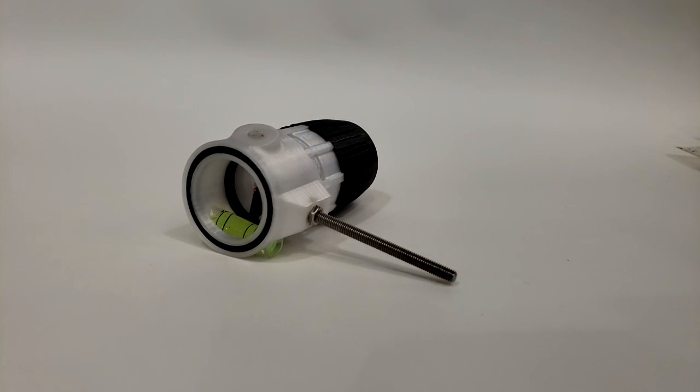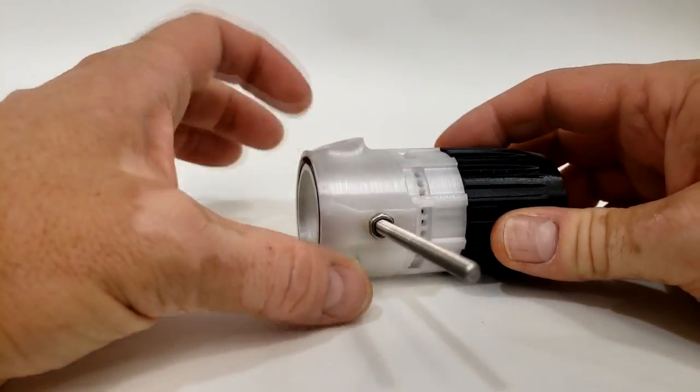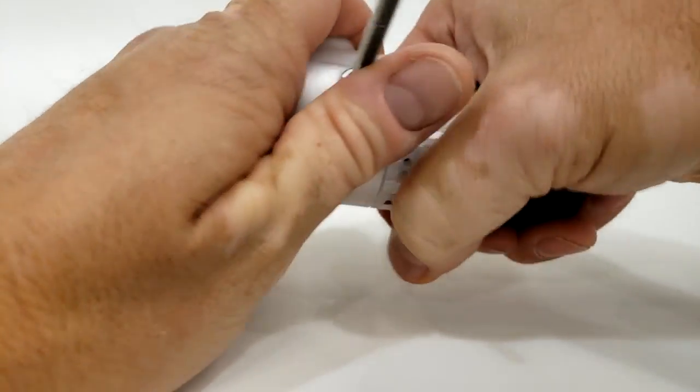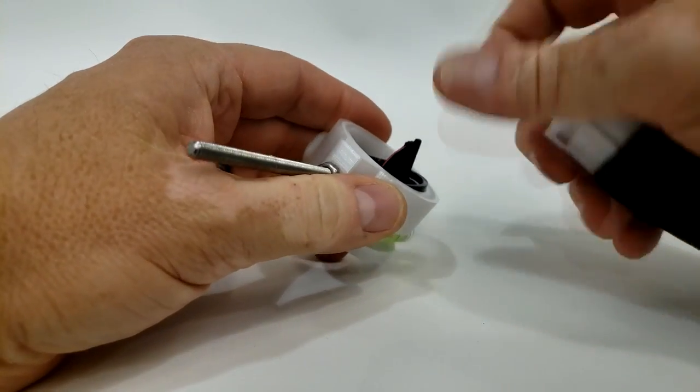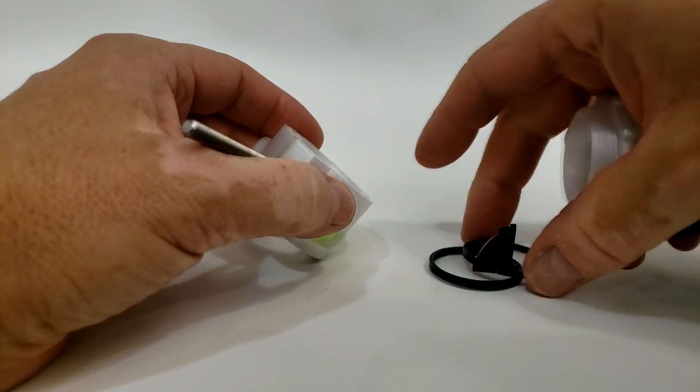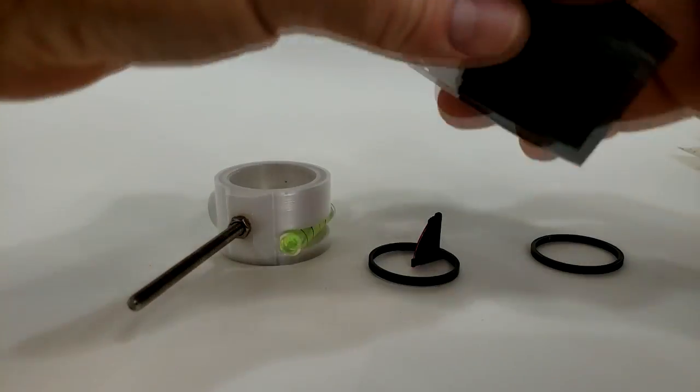So let's talk about exactly what you will receive with your scope kit. You're going to receive the scope housing and rod. You will receive your pin.